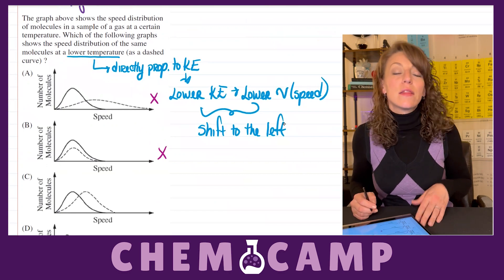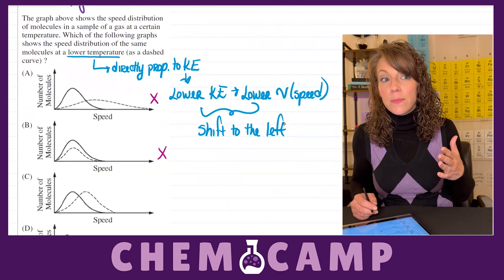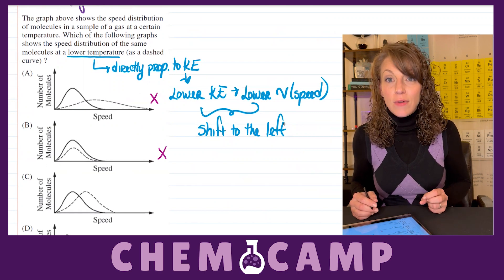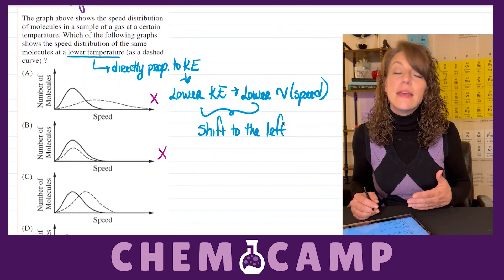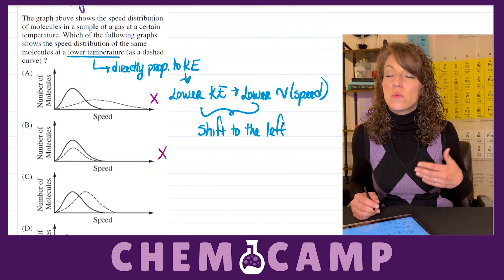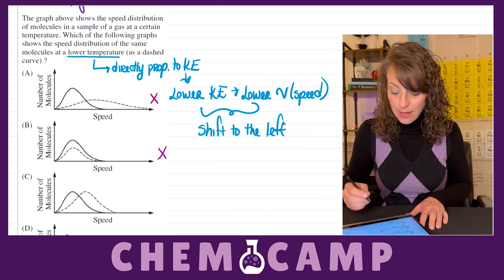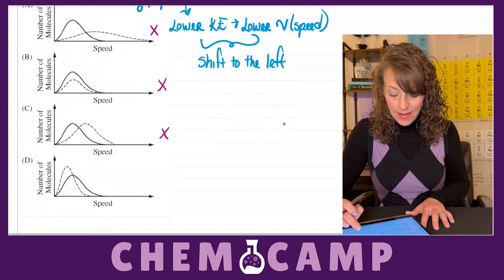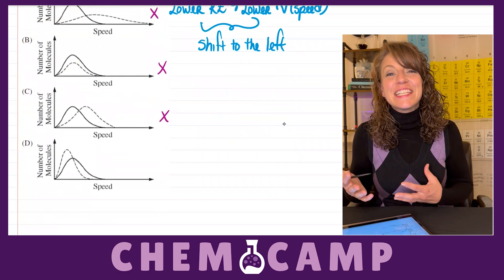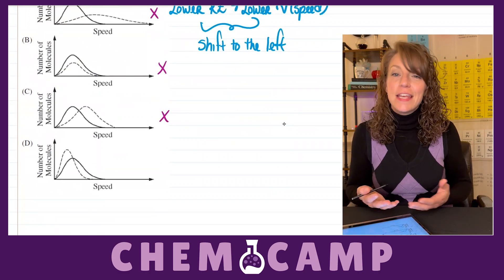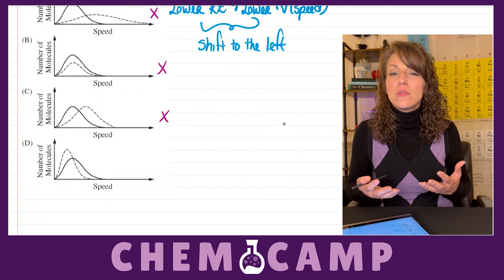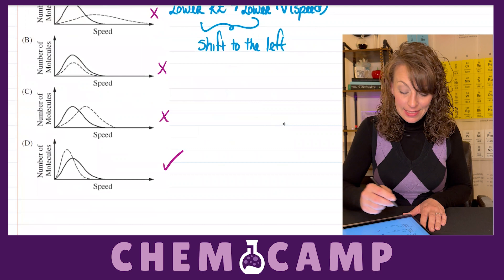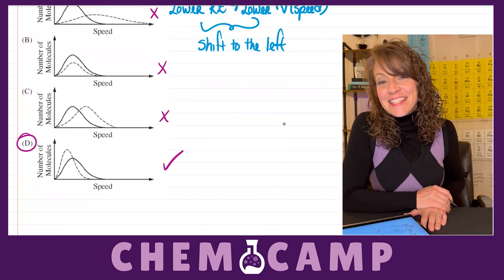In letter C, there's no change in the height of the curve, but it does distinctly shift to the right, indicating again that the speed of those molecules has increased, which would correspond to a higher temperature — and we're looking for a lower temperature. Finally, in letter D, we see that distinct shift to the left, meaning more of those molecules are moving at a slower speed. And that's exactly what we need. So letter D is the answer.